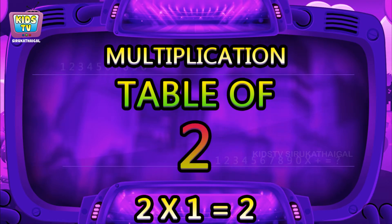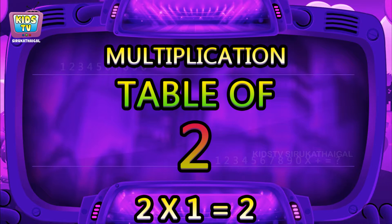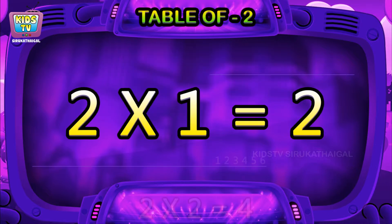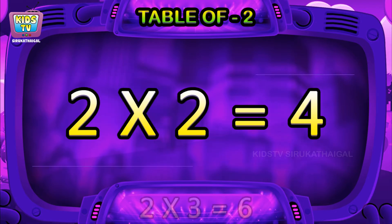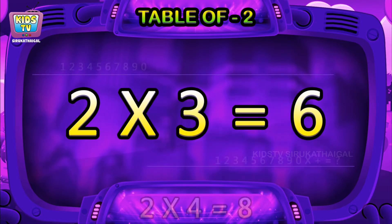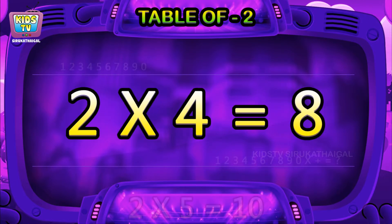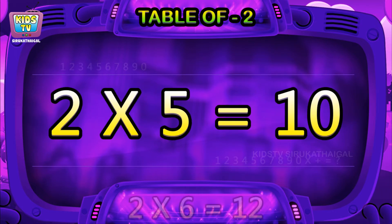Hi friends, now we will learn table of two. Two ones are two, two twos are four, two threes are six, two fours are eight, two fives are ten.